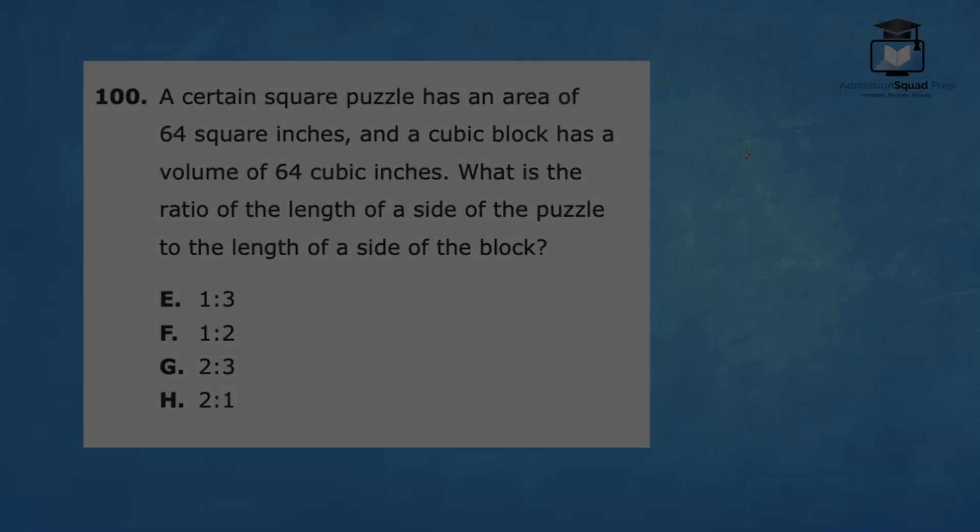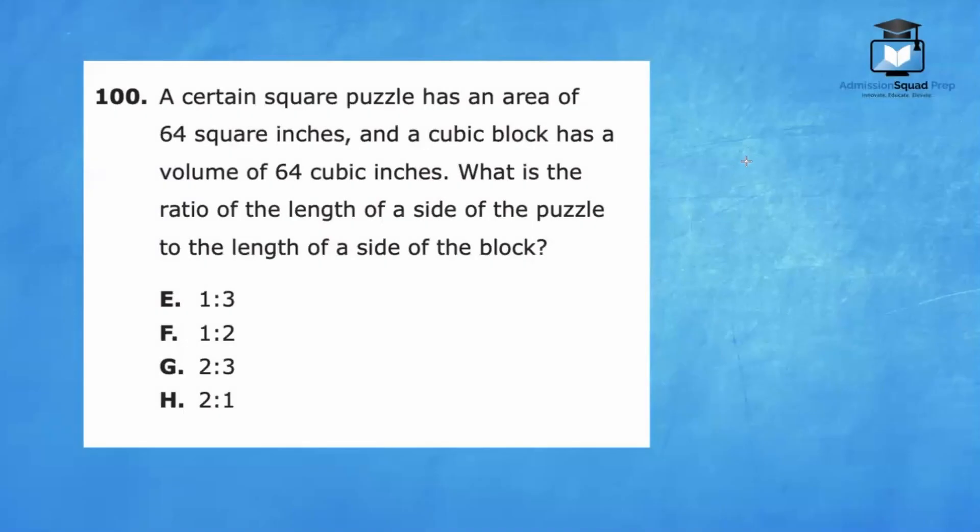Let's continue. Number 100, a certain square puzzle has an area of 64 square inches and a cubic block has a volume of 64 cubic inches. What is the ratio of the length of a side of the puzzle to the length of a side of the block? Let's draw a quick diagram. Now that we have a square and a block or a cube, let's figure out the dimensions of each of these figures.